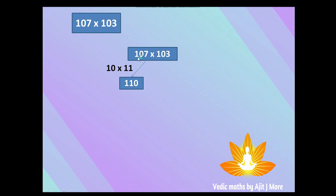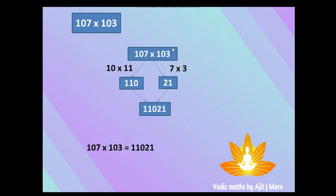We are going to see one Vedic technique to multiply any number by 11, and you'll find it is quite easy. The second part as usual: multiply the unit place digits, that is 7 × 3 = 21. Combine them and you get 11021 — so the multiplication of 107 × 103 is 11021.